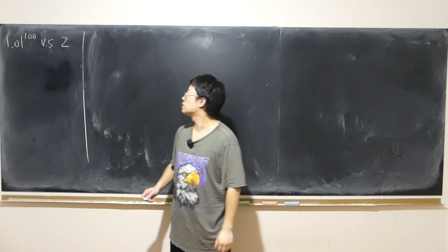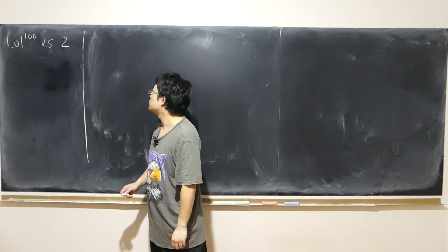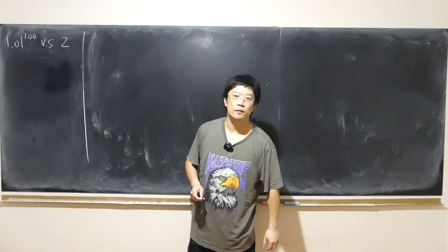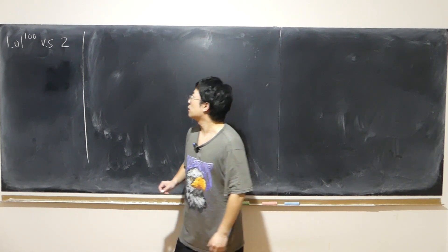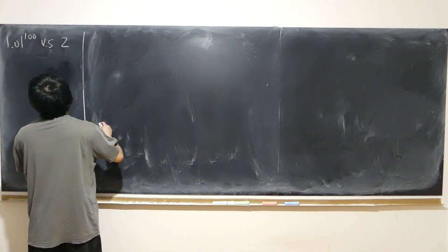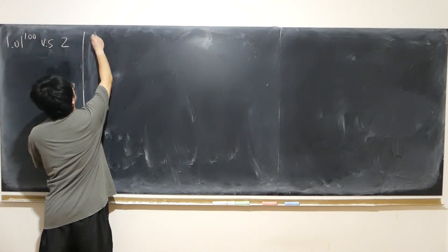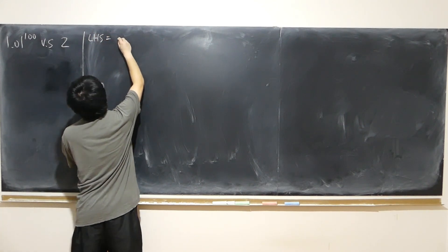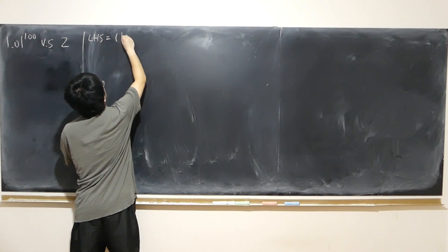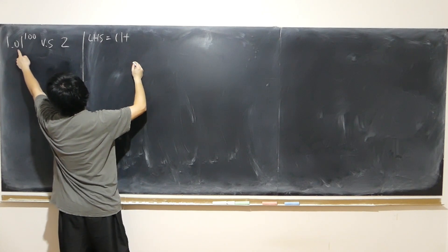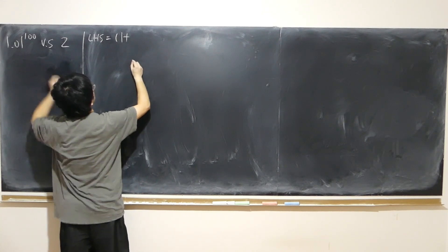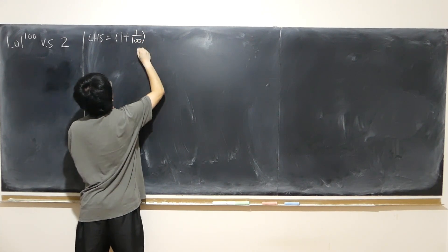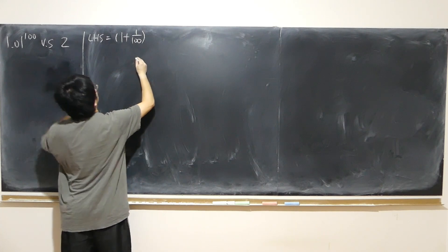I just came across a problem. It says 1.01 to the power of 100 versus 2 — which one is bigger? If I rewrite the left-hand side: 1 plus 0.01 can be written as 1 plus 1 over 100, to the power of 100.